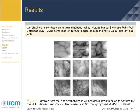We obtained a synthetic palm vein database called the Natural-Based Synthetic Palm Vein Database, comprised of 12,000 images corresponding to 2,000 different subjects. The generated images were compared with real images from the PUT and VERA datasets, where the main vein pattern is best observed compared to the remaining public databases. We randomly took a sample of 10% of the total images from each dataset to compare with the same number of images from our database.